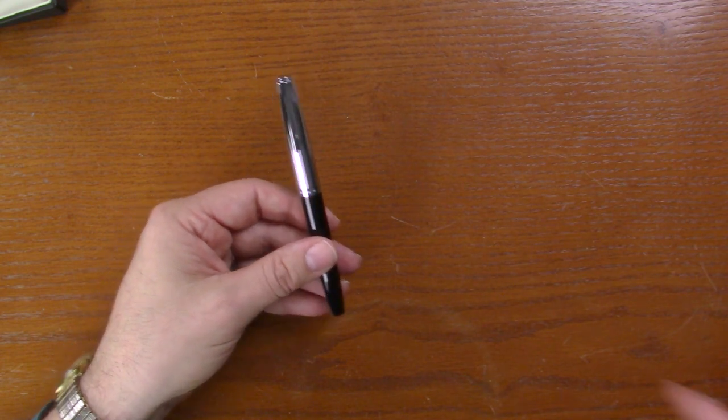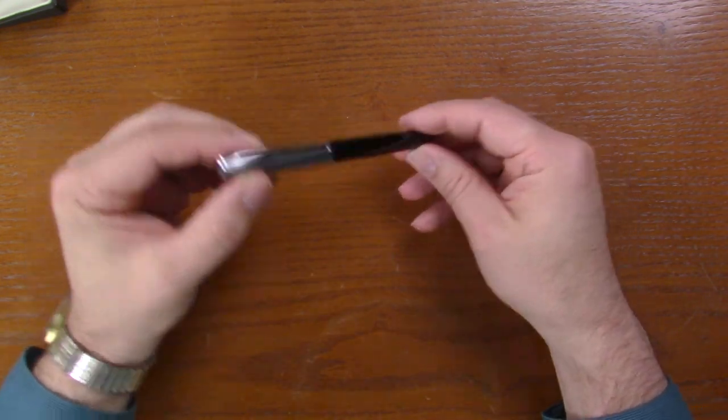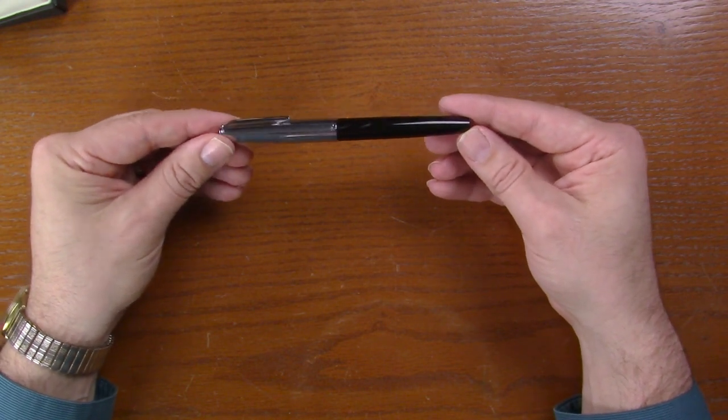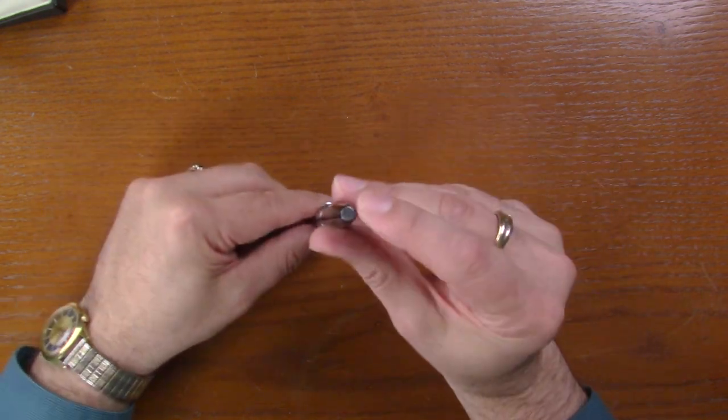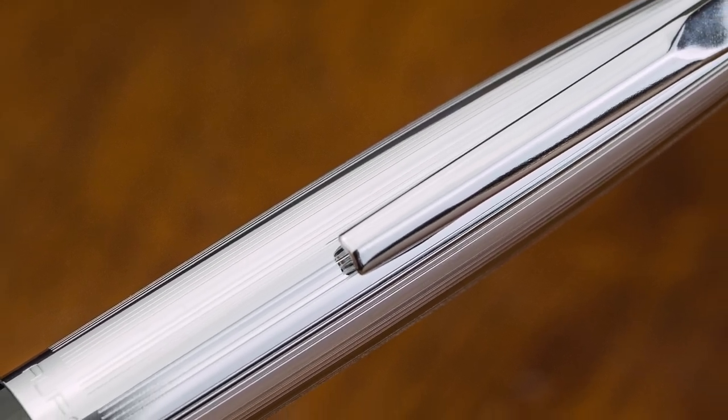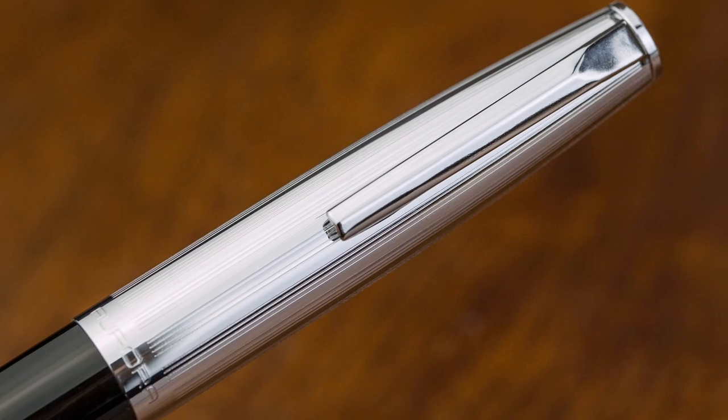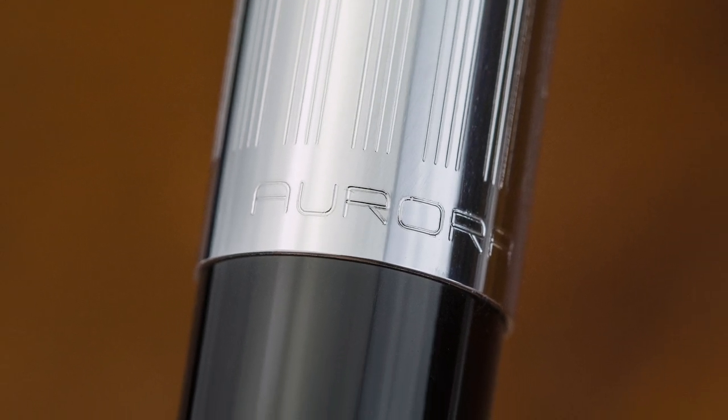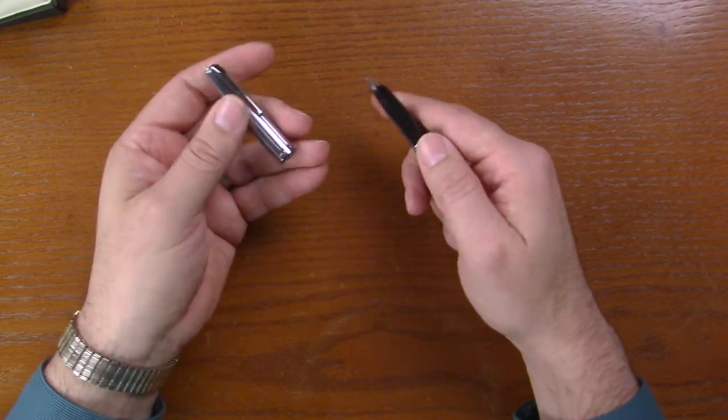Let's take a look at the black here real quick. Very, very simple design. Black barrel. We've got a little chrome button on the end. Nice simple clip. Aurora on the cap band. Made in Italy. Nice looking pen. And it's got some weight. The cap's got some weight to it.